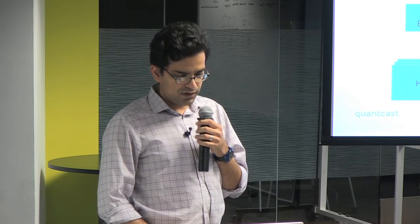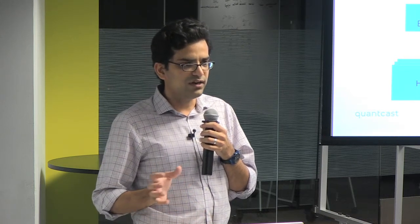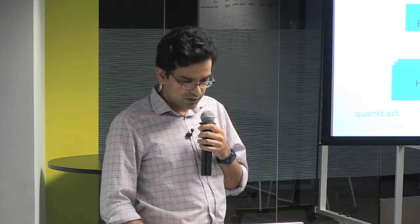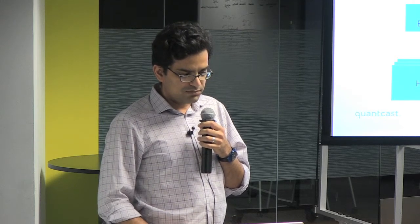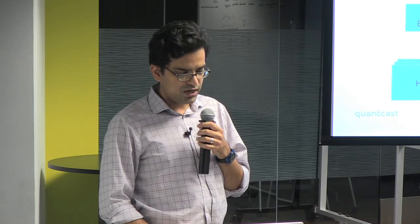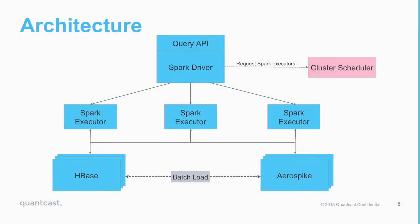A user query comes in through the query API and is executed as a short Spark program. Our programs usually run at web speed — something like one to ten seconds — which, as I'll talk about later, made us realize some problems with Spark. The query is divided among the Spark executors; each executor picks up a shard from HBase and from Aerospike and joins the data. We do linear scans on HBase and hundreds of thousands of random lookups on Aerospike for each query, and finally a reduce-by-key operation combines and returns the results.